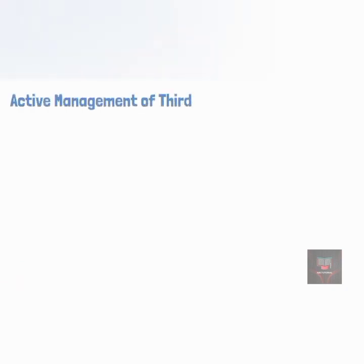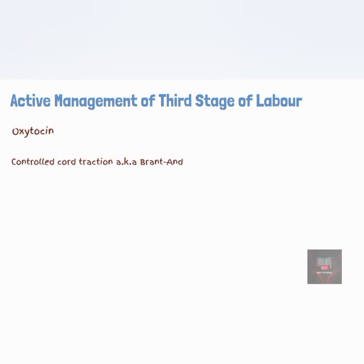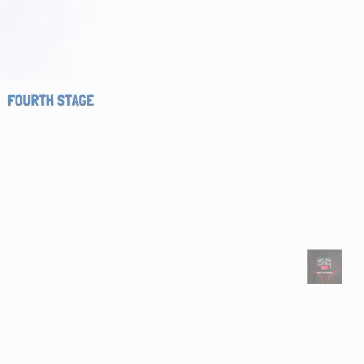The active management of the third stage of labor involves the administration of oxytocin and controlled cord traction, also referred to as the Brandt-Andrews maneuver. The stage referred to as the fourth stage of labor is often described to occur after the delivery of the placenta, and lasts for a duration of about one to two hours after delivery of the placenta.